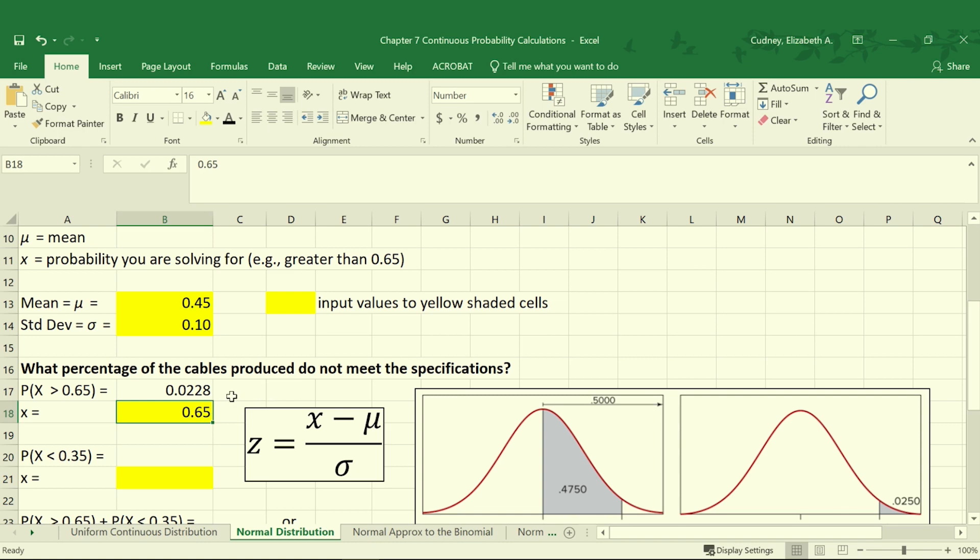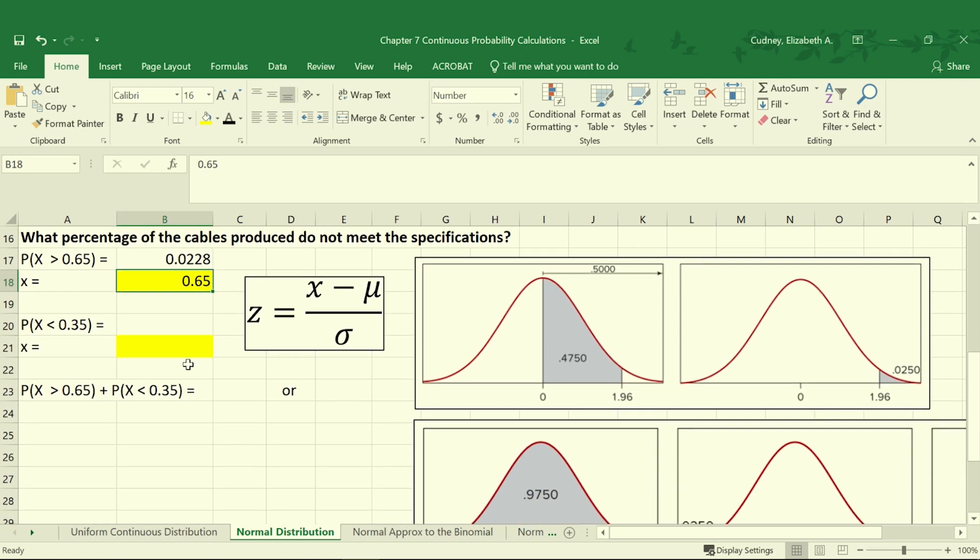When we do that, we get a value of 0.0228, or 2.28%, is our probability that cables will be greater than 0.65. So that gives us our first part of our calculation. We also need to calculate the probability that it's less than 0.35, because that's also outside of our specifications. We'll start by inputting our value of 0.35 in cell B21.